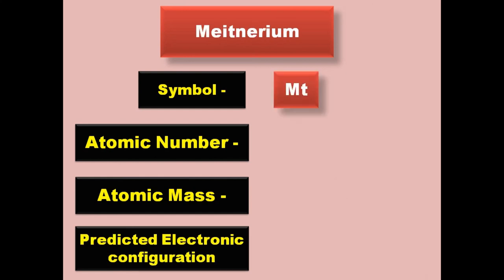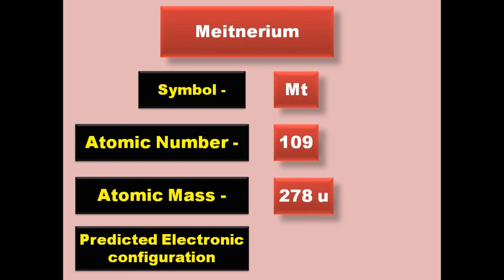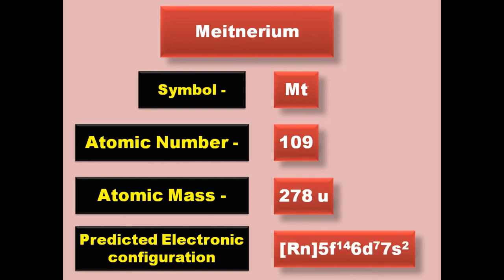Meitnerium has symbol Mt, atomic number 109, atomic mass 278, predicted electronic configuration [Rn] 5f14 6d7 7s2. Meitnerium is a transition metal and exists in solid form at room temperature.